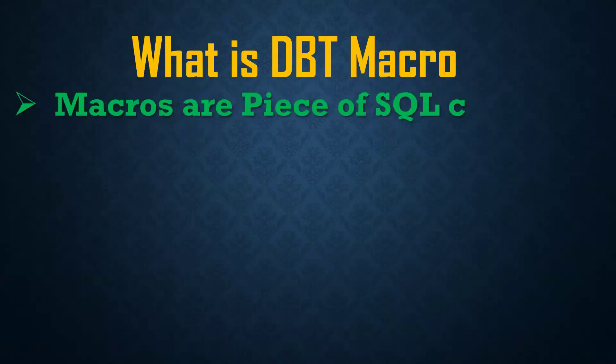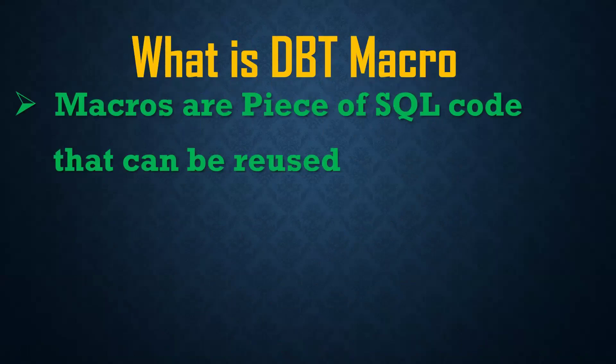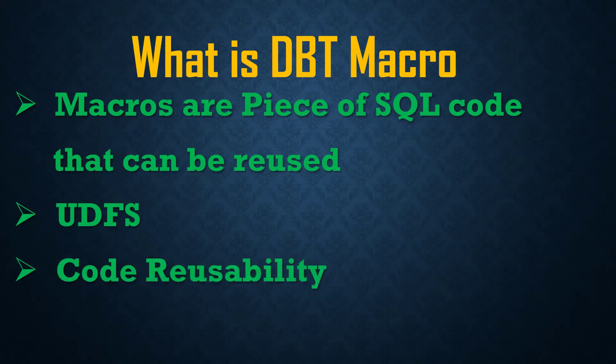DBT macros is nothing but a piece of SQL code that can be reused. It is a block of SQL statements or conditional statements that can be reused. If you see in Snowflake, we have the concept of UDFs and stored procedures — user-defined functions and procedures. Same thing: in DBT, macros will act as UDFs and procedures. It is mainly for code reusability — once written, we can use it in multiple places, multiple models, and multiple macros.